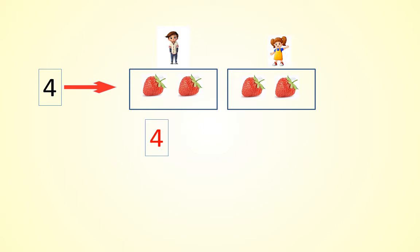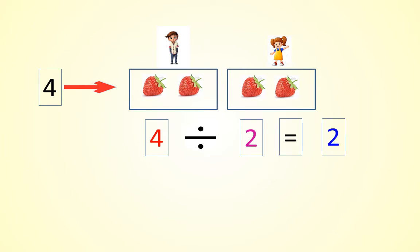Here we divide these four strawberries into two equal groups. Four strawberries were there and we divided. Divided means this sign — it means division. Four strawberries we divided into two equal groups. Then how many they got each? It is two. So here four divided by two equals two.